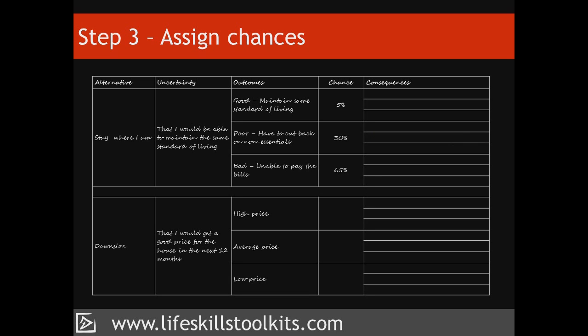In order to assign chances to the outcomes of her second alternative – downsize – Franny does some homework first. She searches the internet for websites listing property sales in her area to learn what price she could ask for her home, and invites three estate agents to view her property and provide price estimates. She's pleased to learn that due to the location of her property, she could realise a price at the high end of the range she found online. Armed with this knowledge, Franny assigns a 60% chance to her high outcome, a 30% chance to her average, and a 10% chance to her low outcome.